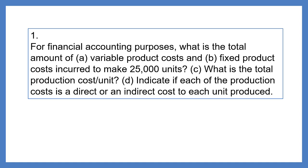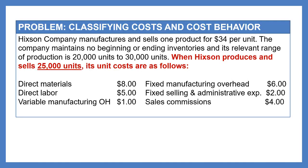Question 1. For financial accounting purposes, what is the total amount of variable product cost and fixed product cost incurred to make 25,000 units? What is the total production cost per unit? And indicate if each of the production costs is a direct or indirect cost to each unit produced. Notice that the unit costs provided are based on a sales and production level of 25,000 units — it is important to note this activity level.